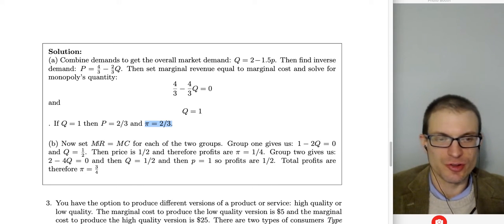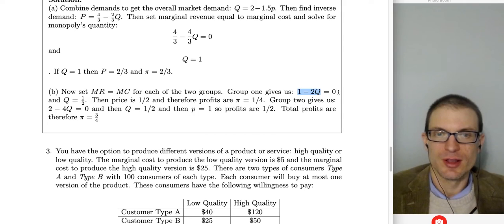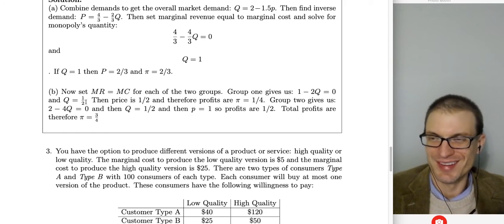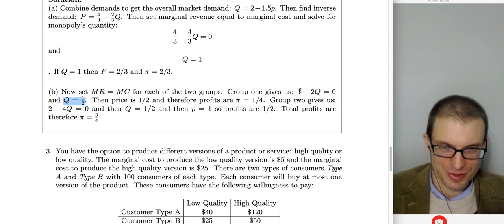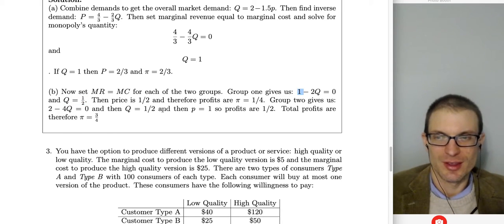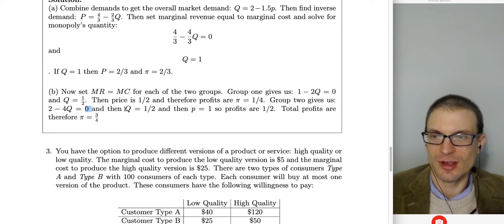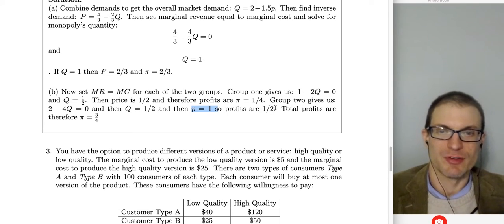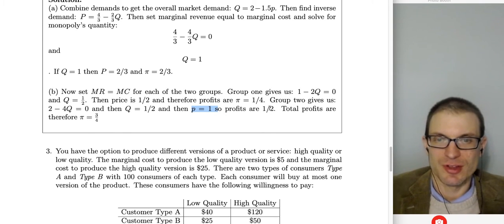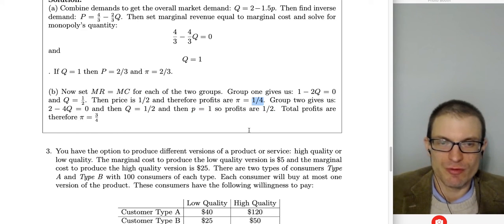With third-degree price discrimination, set MR = MC for each group. Group one: MR = 1 − 2Q = 0, so Q = 1/2 and P = 1 — wait, the vertical intercept of demand is 1, so at Q = 1/2, P = 1/2. Wait — P = 2 − 2(1/2) = 1. Profits = 1/2 × 1/2 = 1/4. Group two: MR = 2 − 4Q = 0, so Q = 1/2 and P = 1. Profits = 1 × 1/2 = 1/2. Total profits = 1/4 + 1/2 = 3/4.